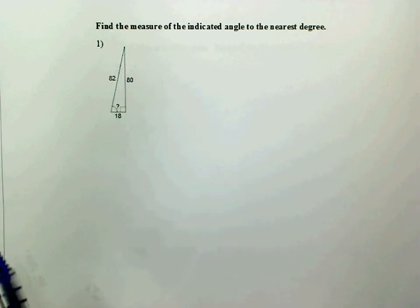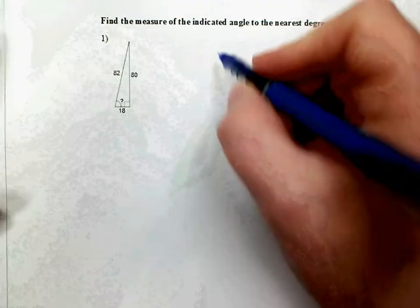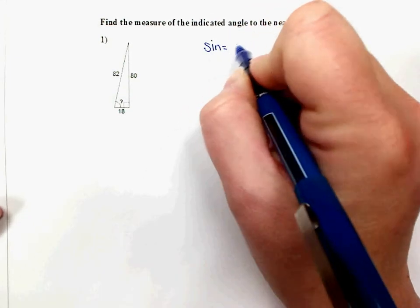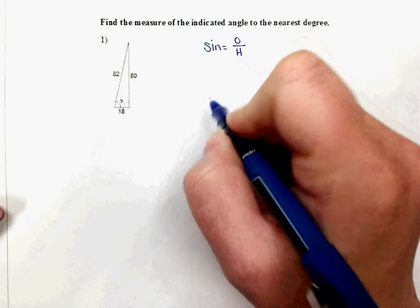Since you're given all three sides, it doesn't matter which of the trig functions you use. You can use sine, which remember to use sine, you do the opposite side over the hypotenuse,